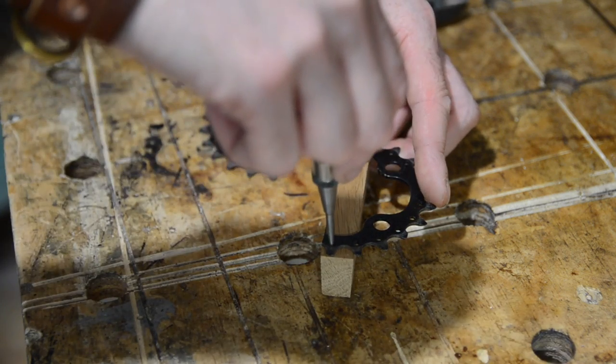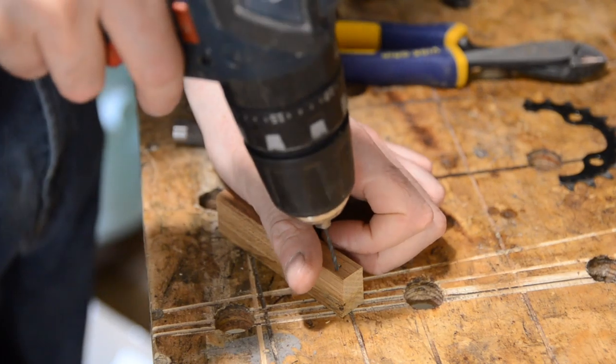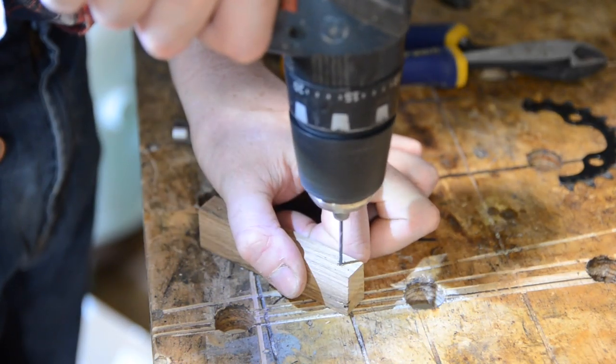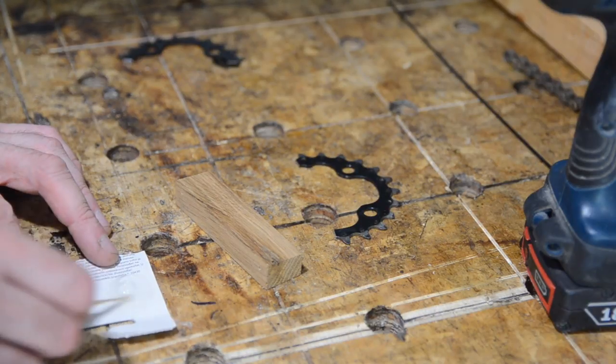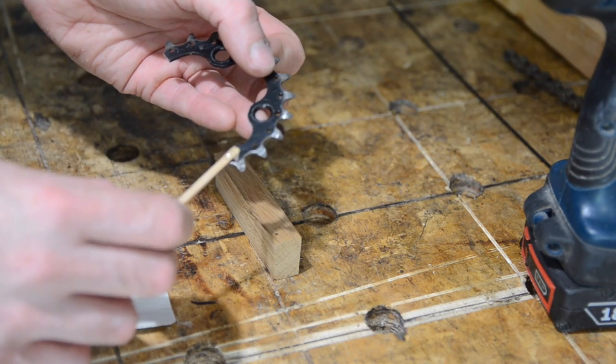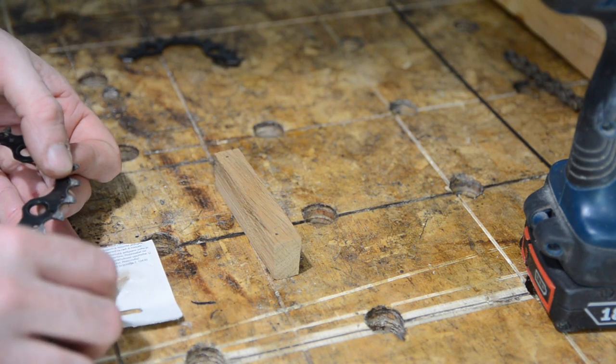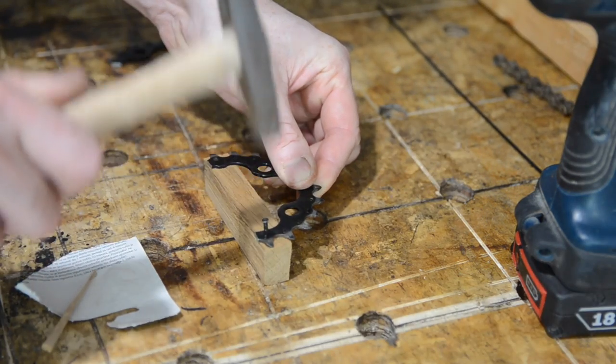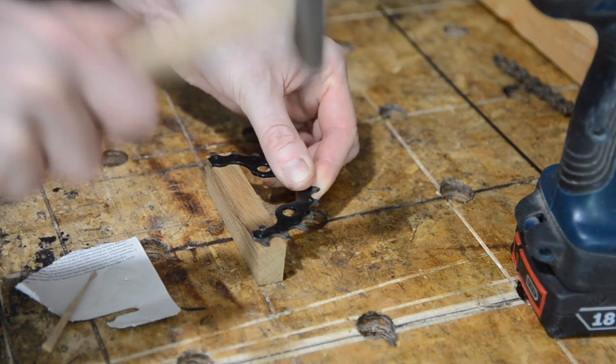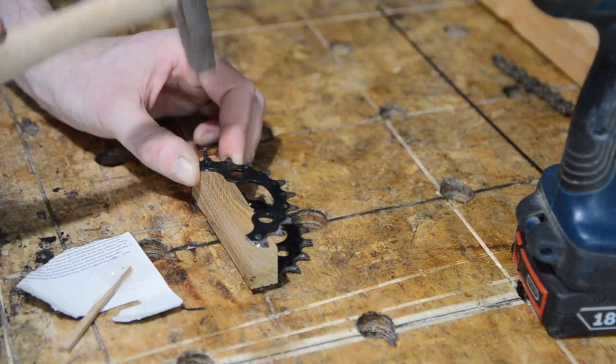I get the gear on and then mark out where the nails are going to go and then because they're not proper nails I drill a little pilot holes first. For a bit of added security I knock up a small batch of epoxy, put a dab on the back of each gear and then get it nailed in place. Bicycle wheel spokes make surprisingly good nails. Who knew?